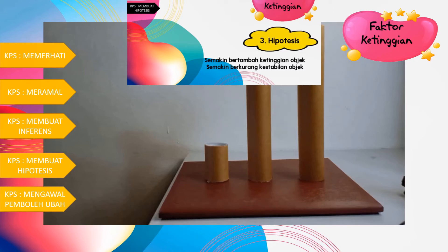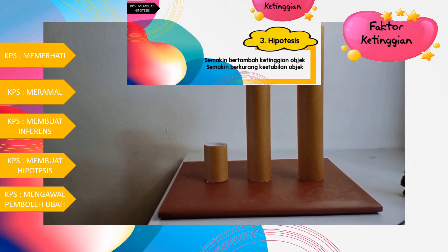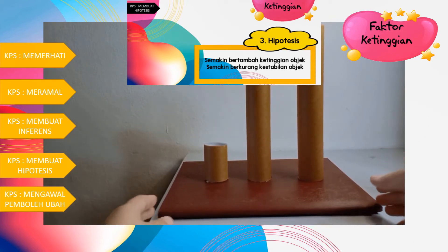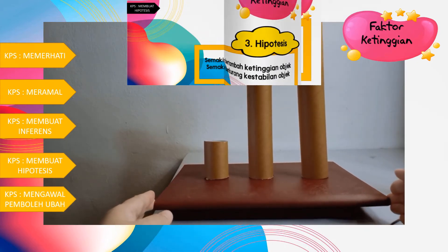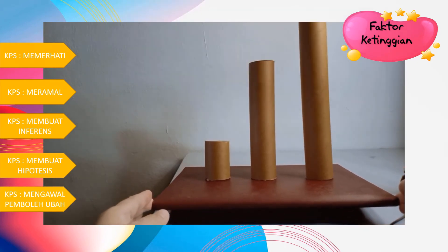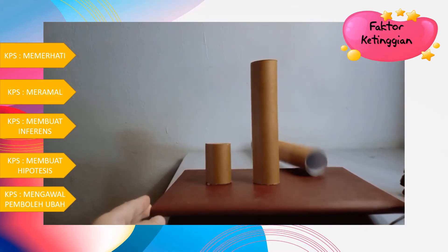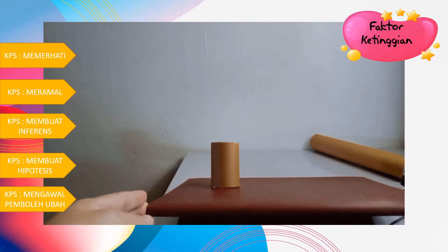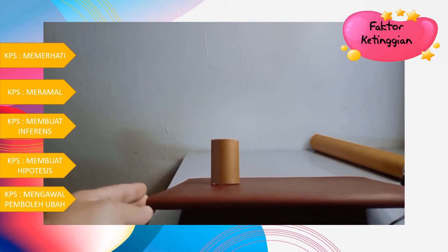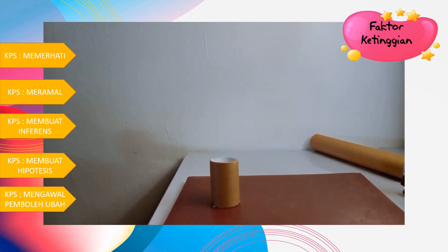Kita akan tengok amali yang kedua, masih lagi faktor ketinggian. Yang tinggi jatuh dahulu, diikuti yang kedua. Yang rendah masih lagi stabil.